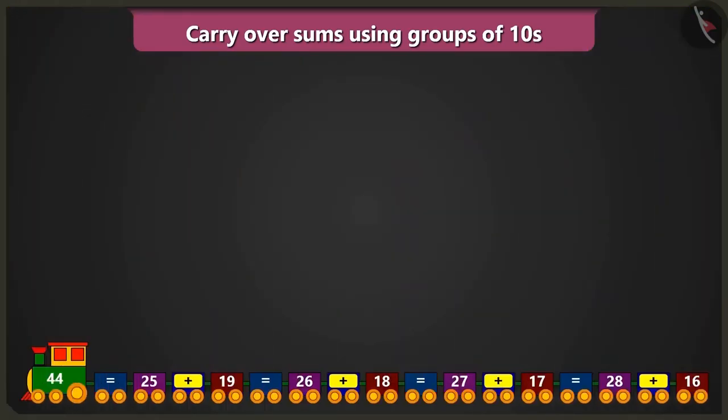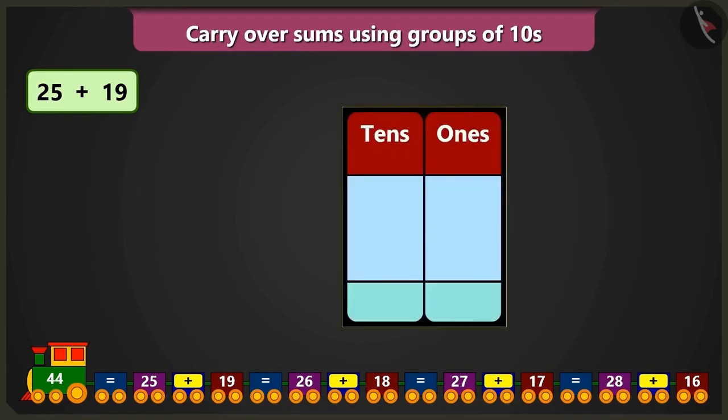In this train, first of all, 25 and 19 have been added. So now, we will place these numbers in the box of tens and ones and add them. Adding 5 ones and 9 ones will result in 14. Out of 14, we will place 4 in the ones place and carryover 1 in the tens place.